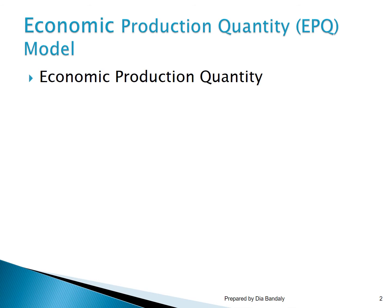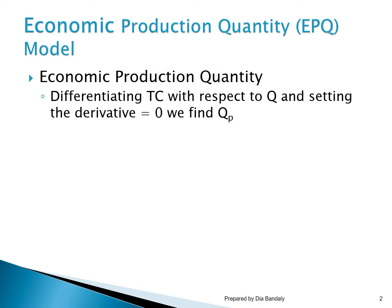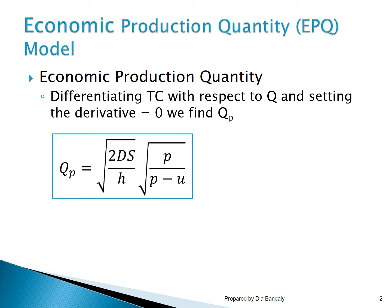To find the EPQ — the optimal production quantity — as we did in the EOQ, once we find the relationship between total cost and quantity, we differentiate the total cost with respect to Q and set it equal to zero. You don't need to perform the differentiation in this course, because the equation for the optimal production quantity will be given to you. We can also call it the optimal batch size or optimal lot size.